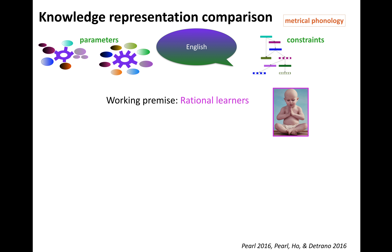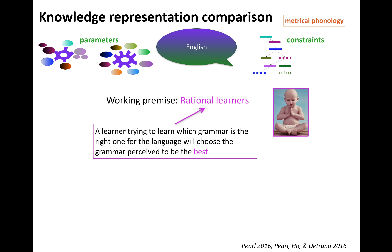I'm trying to figure out how we can think about learning in this wild and wacky world of English metrical phonology. The working premise here is that we're looking at rational learners, and being rational means trying to learn which grammar is the right one by choosing the one that's perceived to be the best, because when you find the best thing, the rational thing to do is pick that thing.